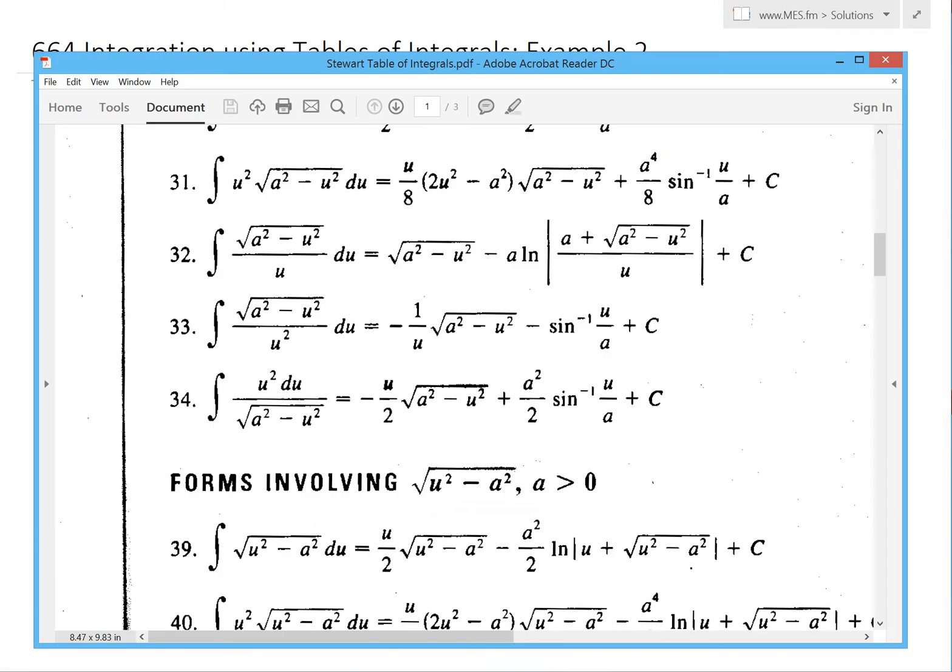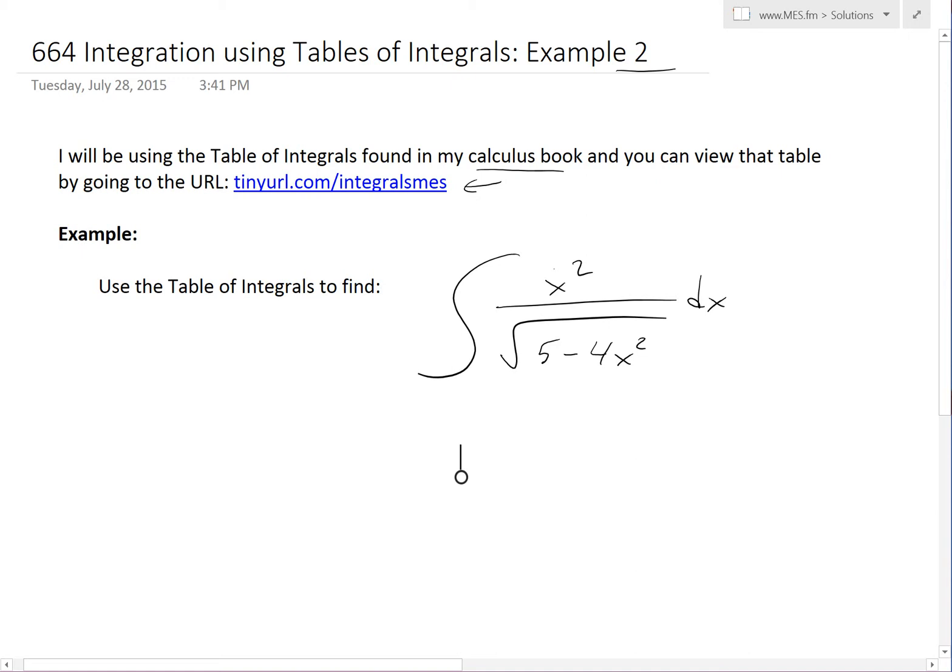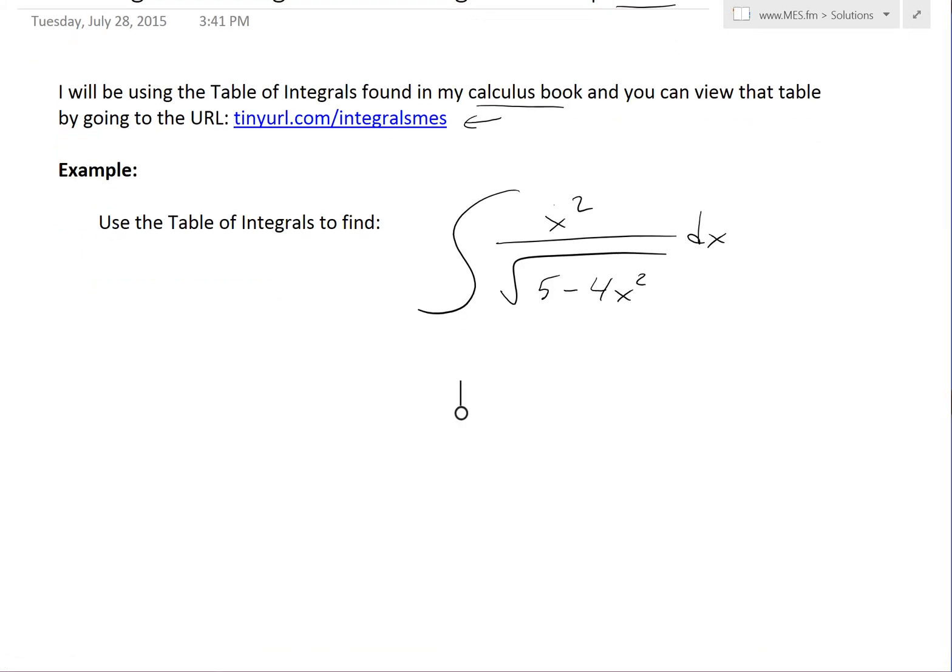This is pretty much the table that you will see. Now this is the example I'll go over. It states: use the table of integrals to find the integral of x squared divided by square root of 5 minus 4x squared dx.